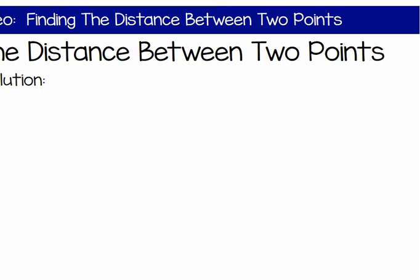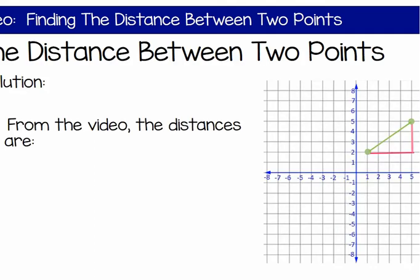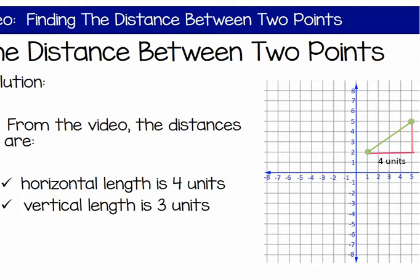Find the distance between the two points over and up. Write the coordinates. Now, from the video, you have found that the distances are the horizontal length of four units and the vertical length of three units.